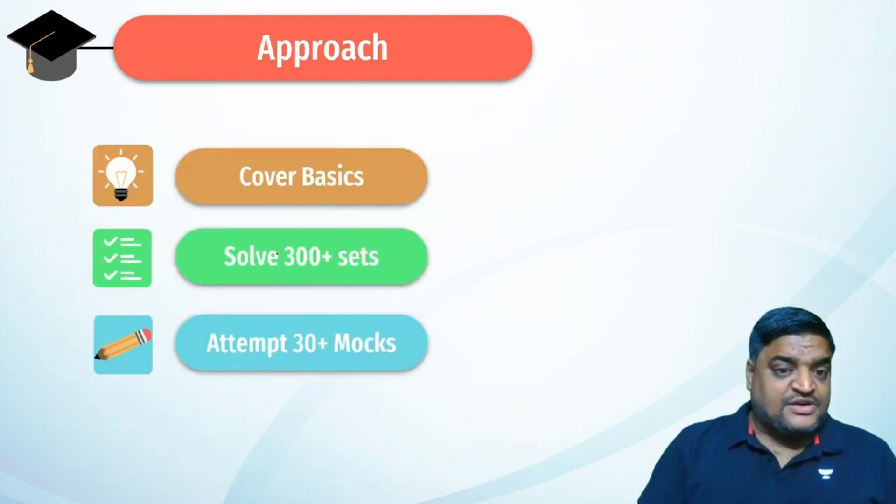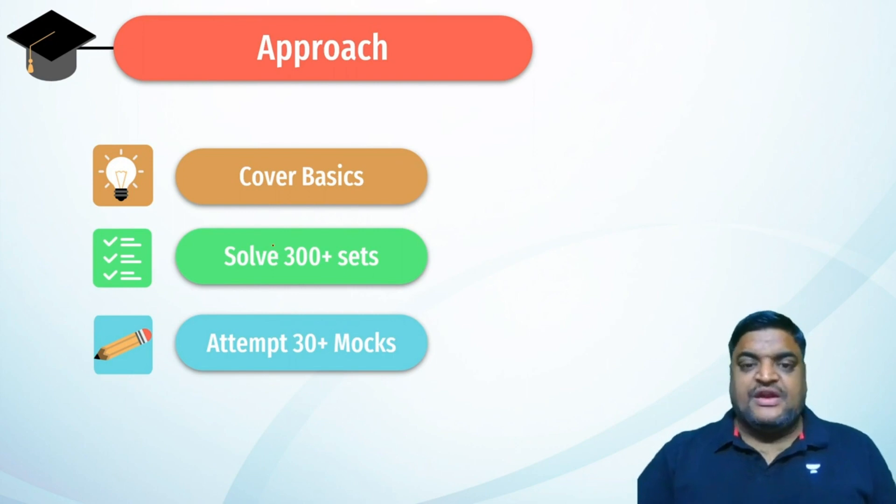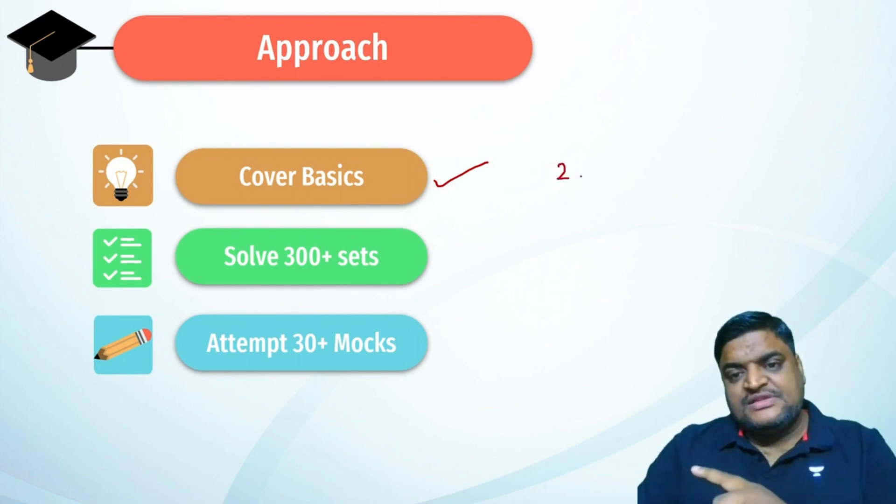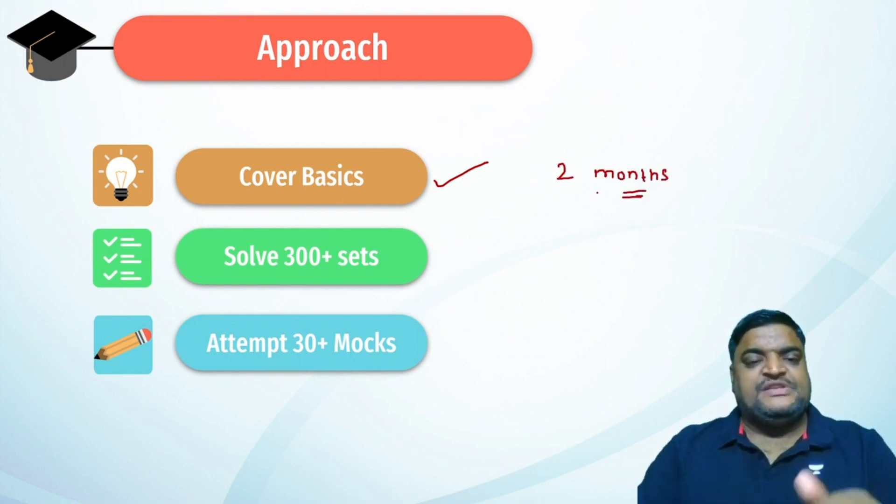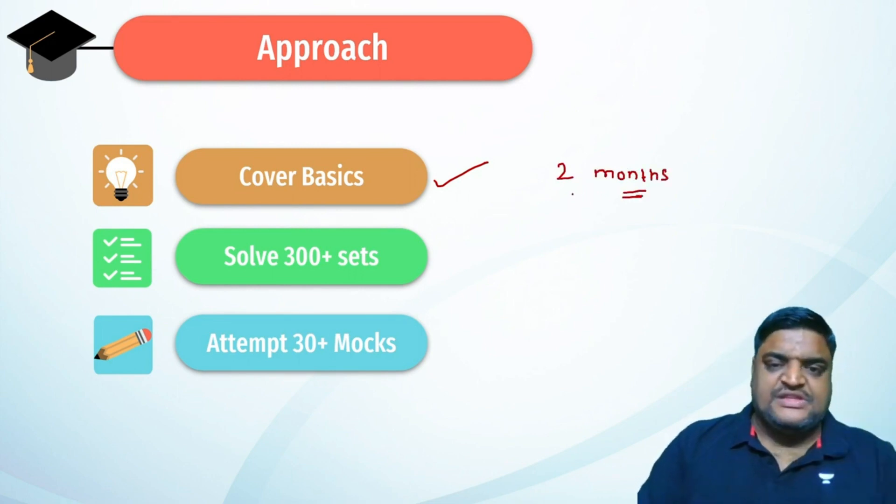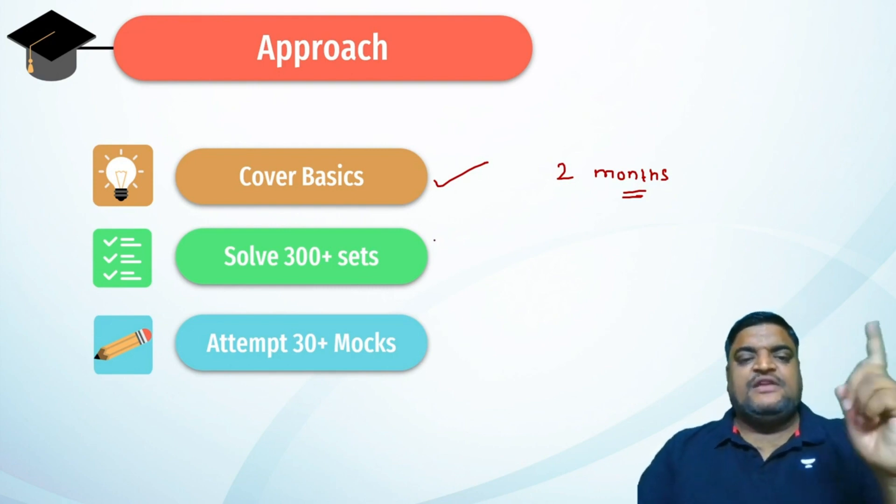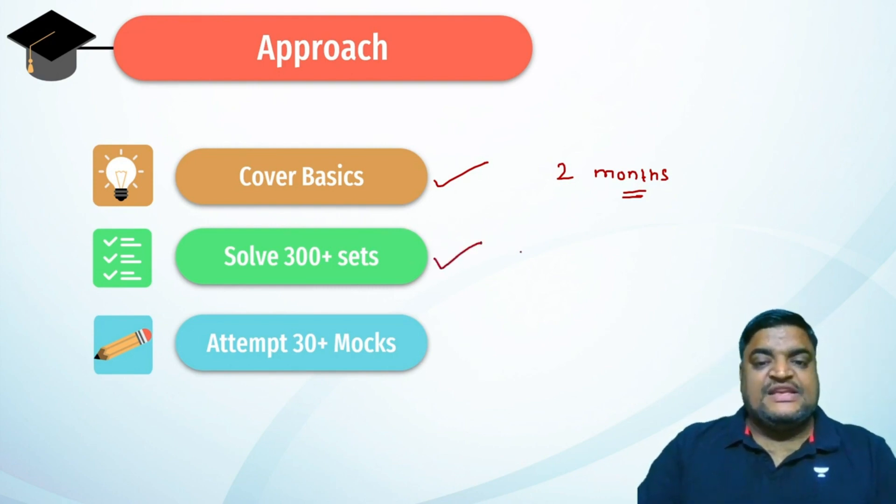Finally, the broad approach for entire DLR should be: you should be covering the basics topic-wise - that should be the first phase of your preparation and ideally should take two months. Once you are done with the basics in two months, you need to solve 300 plus exam level sets.